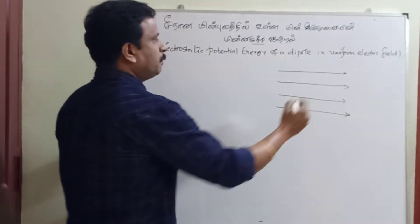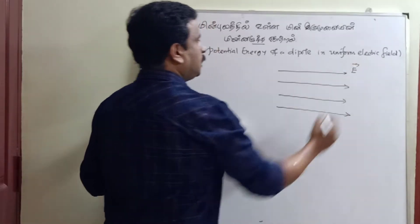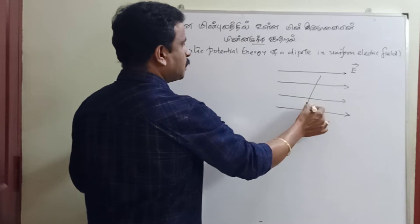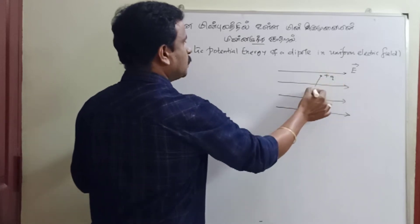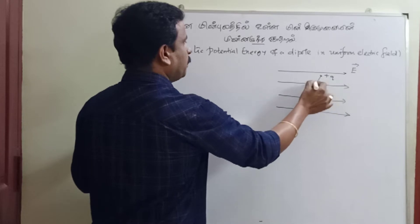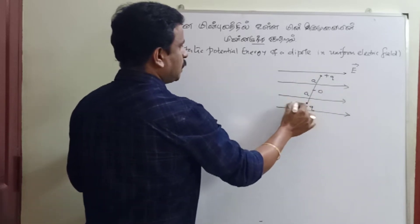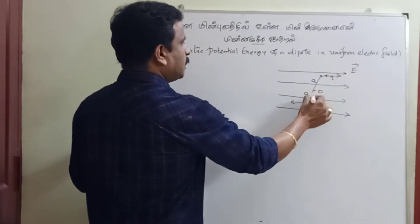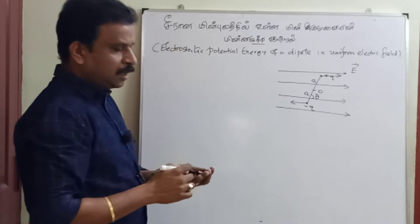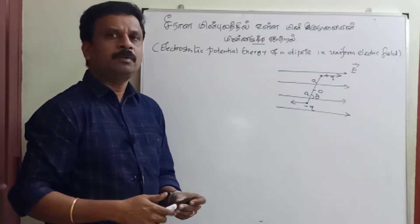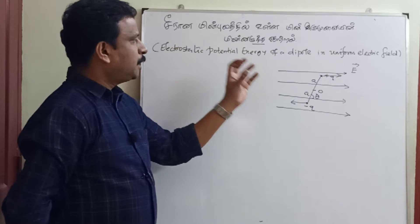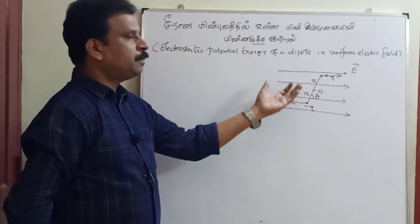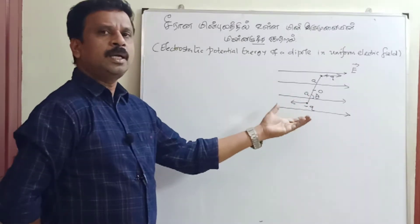In a uniform electric field vector E, we place a dipole — minus q and plus q — with a midpoint, and the dipole makes an angle theta with the electric field direction.